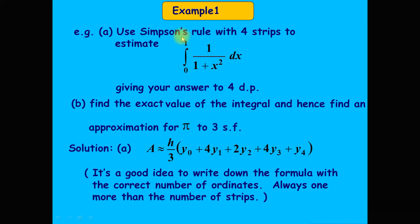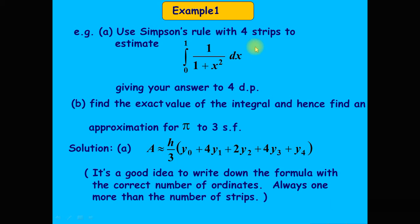Simpson's rule with four steps formula is given by h/3 times (y₀ + 4y₁ + 2y₂ + 4y₃ + y₄). The initial and final range points y₀ and y₄ are not multiplied by four or two. Odd-position points like y₁ and y₃ are multiplied by four, and even-position points like y₂ are multiplied by two.